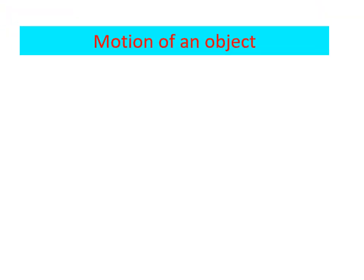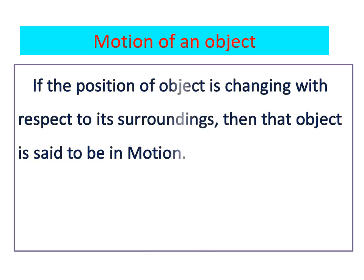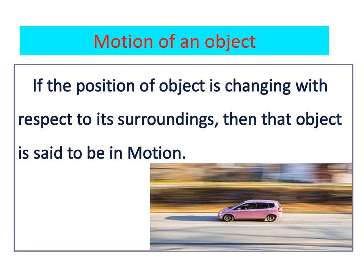The first topic from this chapter is motion of an object. Consider whenever you are travelling in a bus — you see outside the bus all the objects going in the backward direction. But is the person sitting next to you in motion? No, that person is not in motion. Motion is whenever an object is changing its position with respect to its surroundings. If the position of an object is changing with respect to its surroundings, then that object is said to be in motion.